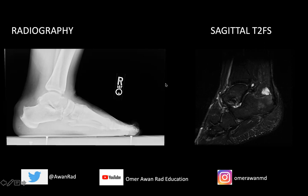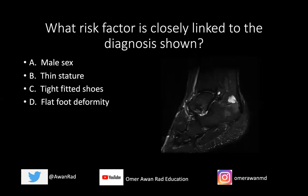Take a look at these images. There's a plain film and there's an MRI. There are obvious and more subtle findings on both of these. The question I have for you is: what risk factor is closely linked to the diagnosis shown? Is it male sex, thin stature, tight-fitted shoes, or flat foot deformity?